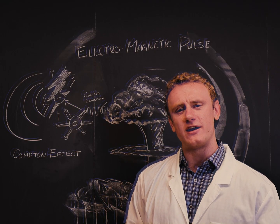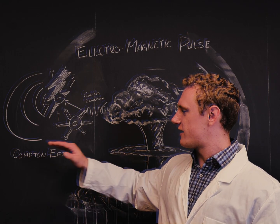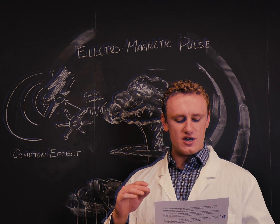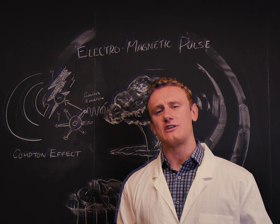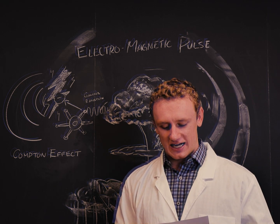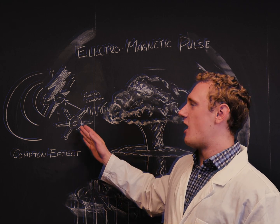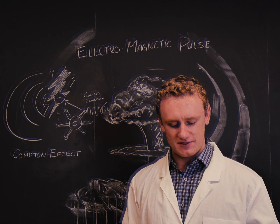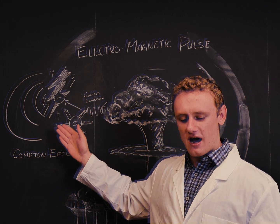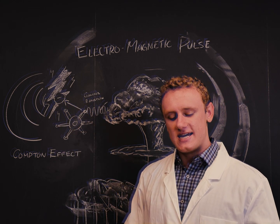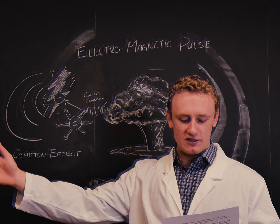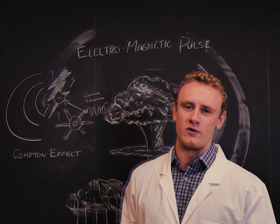Nuclear bombs generate electromagnetic pulses via the Compton effect. Photons of gamma radiation can knock loose electrons from atoms of low atomic numbers. After the electron is freed from the nucleus of oxygen or nitrogen in the Earth's atmosphere, it interacts with the Earth's magnetic field to create a fluctuating electric current. This, in turn, generates the propagating magnetic field, which spells doom to vulnerable devices.